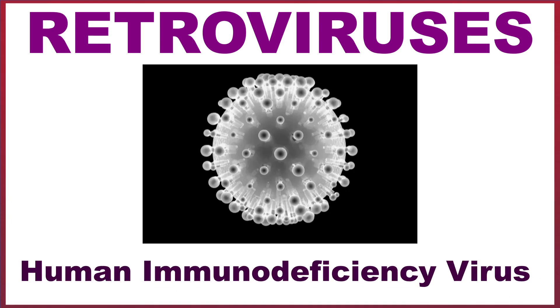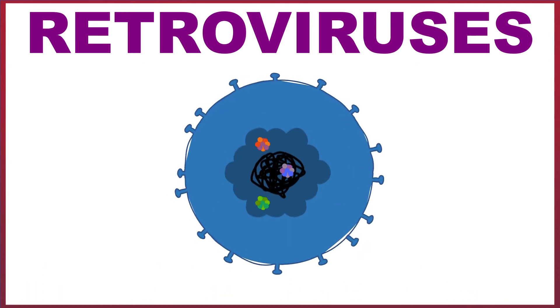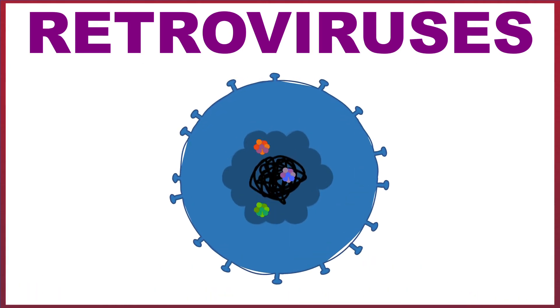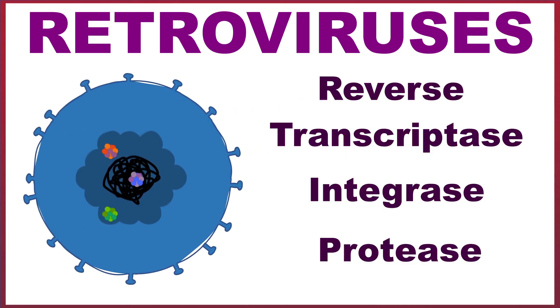Retroviruses, such as the human immunodeficiency virus, are enveloped viruses which have a core protein which contains the RNA genome, as well as three enzymes: reverse transcriptase, integrase, and protease.